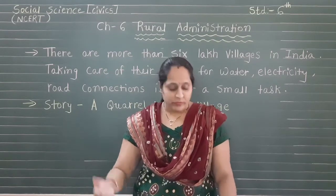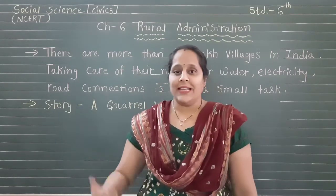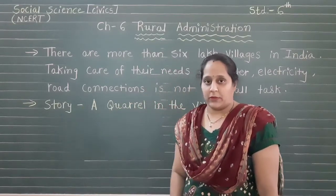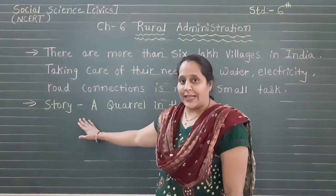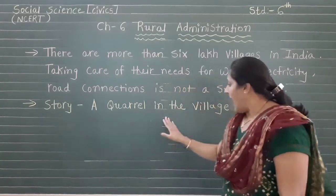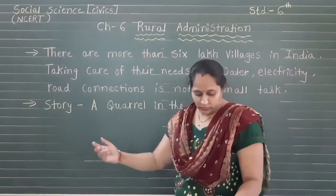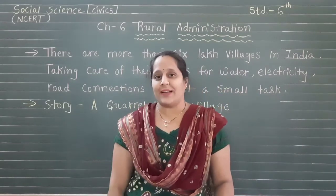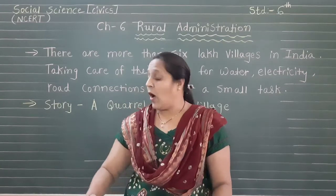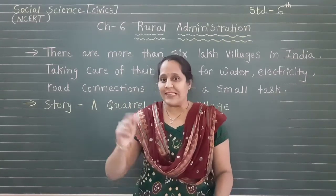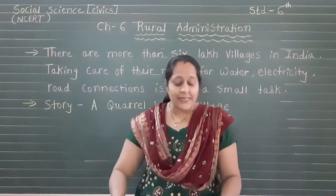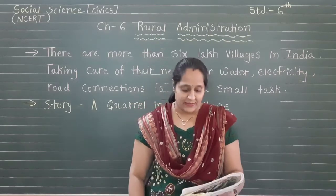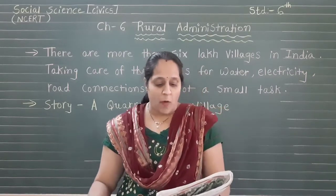In this chapter, a story is given to better understand rural administration. This is a story set in a rural area, based on a quarrel in the village. There are mainly two characters. Mohan is a farmer whose family owned a small agricultural land which they had been farming for many years.